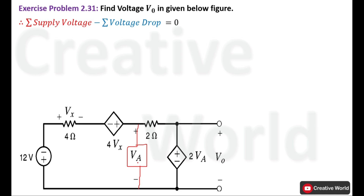Now we have two loops inside the circuit: one is an assumed or imaginary loop, and the other one is the real loop inside the circuit. Now we have to assume the direction of current. We will solve this problem in two paths: first we will apply Kirchhoff's Voltage Law inside this imaginary closed loop, and then KVL will be applied across the outer closed loop. We are considering that current i is passing through both the imaginary and the outer loop.